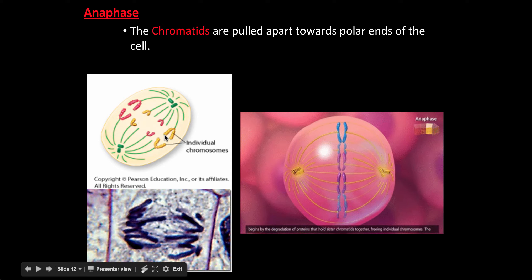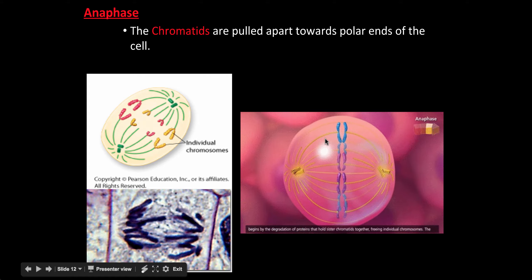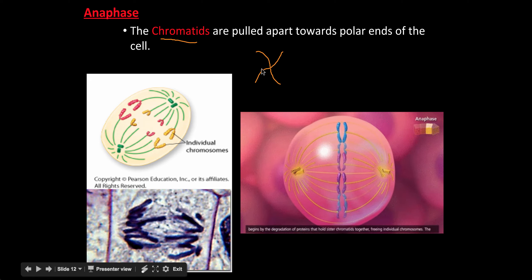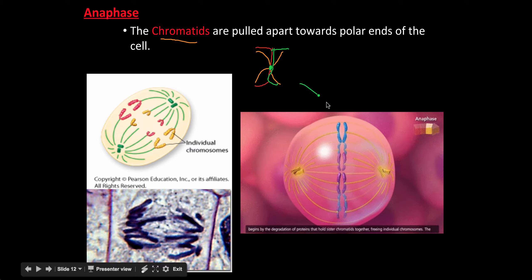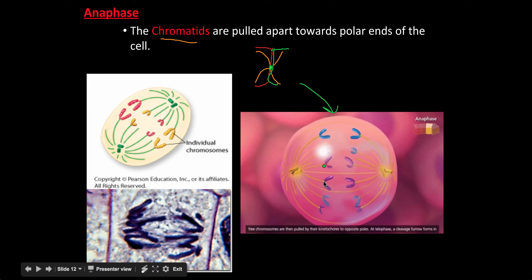Anaphase is the third stage of mitosis. In anaphase, chromatids are pulled apart towards the opposite ends of the cell. A chromosome is X-shaped — one chromatid is one half and the other chromatid is the other half, connected by a centromere. The spindle fiber attaches at the centromere and pulls one half one way and one half the other way, and that's what you're seeing in this animation.